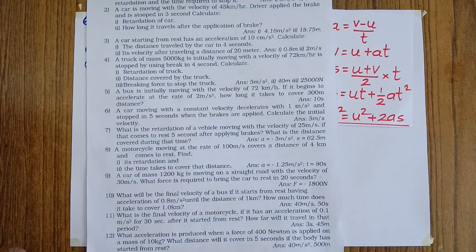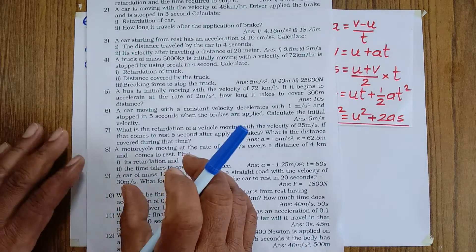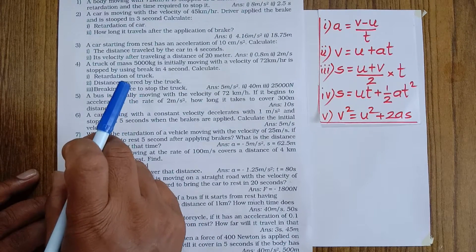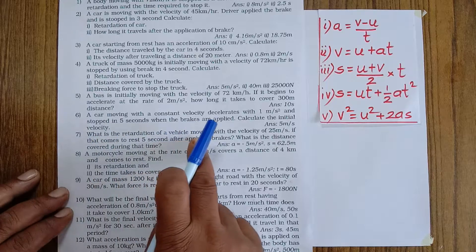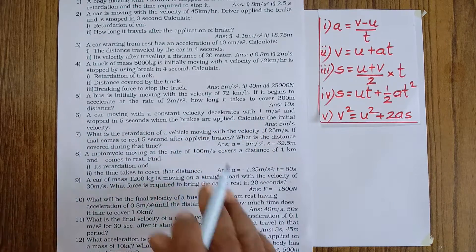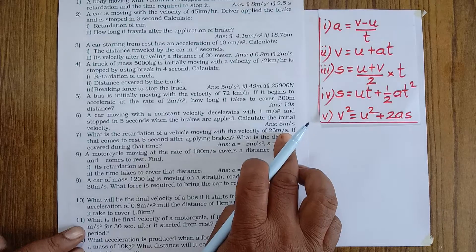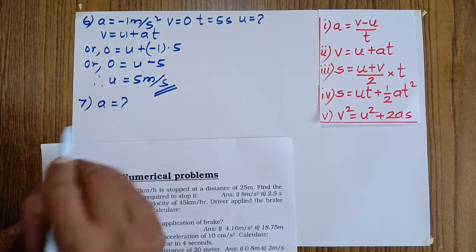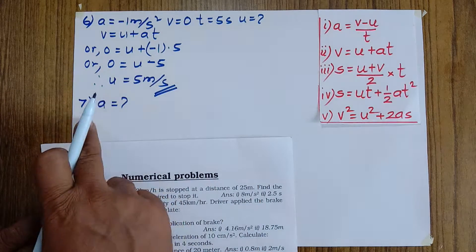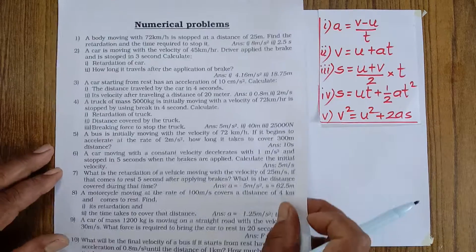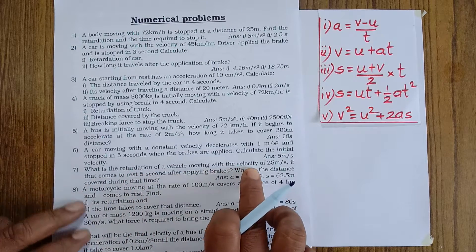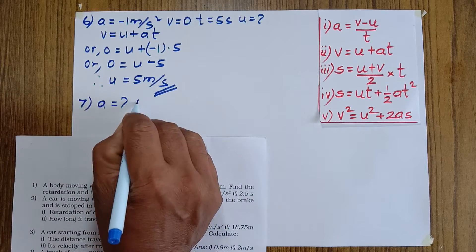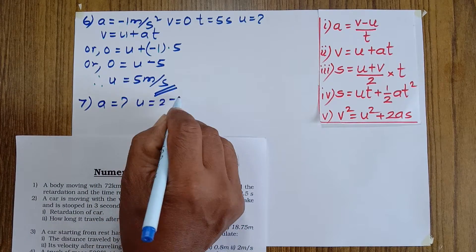Now question number seven. The goal is to give you a clear idea about selecting the right equation for a particular problem. What is the retardation of a vehicle moving with a velocity of 25 meters per second? Retardation means negative acceleration, so a is unknown. Initial velocity u equals 25 meters per second.